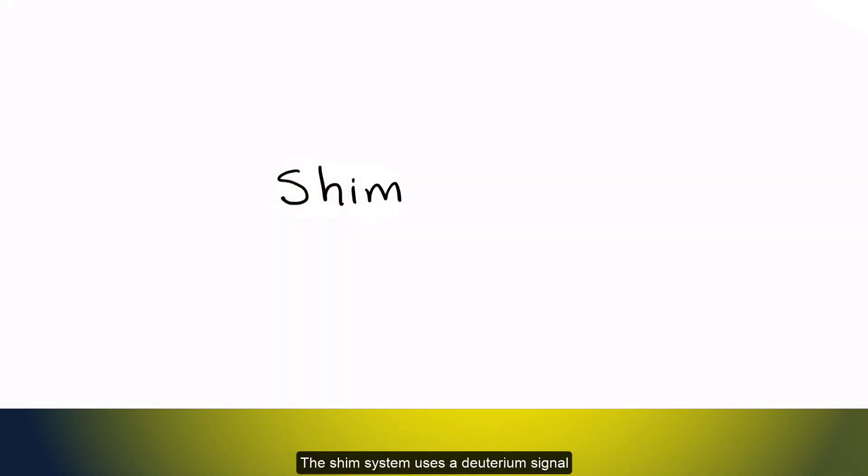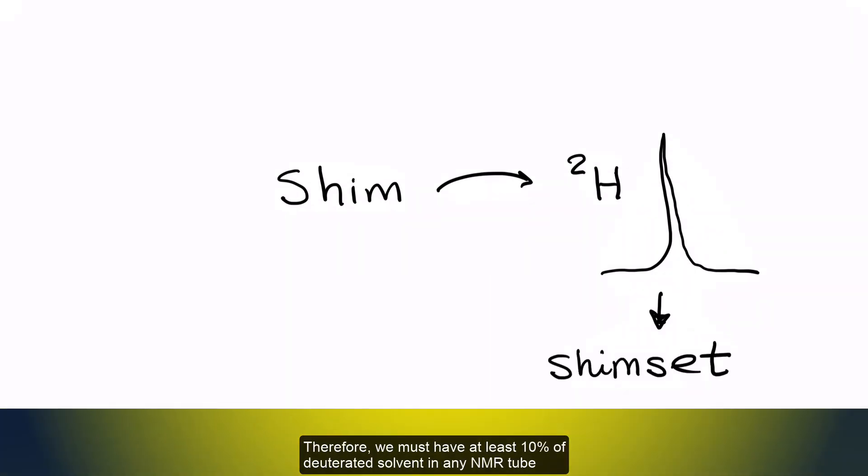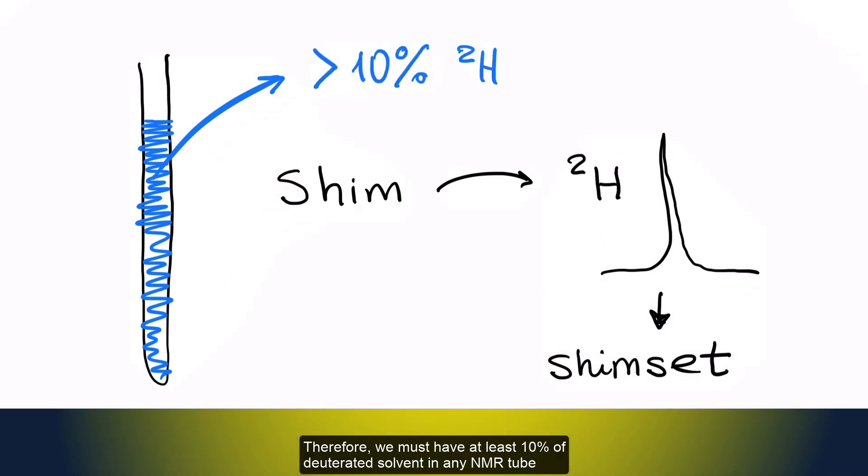The shim system uses a deuterium signal to decide on shim values best for the inserted sample. Therefore, we must have at least 10% of deuterated solvent in any NMR tube.